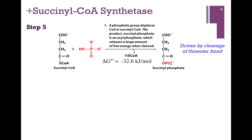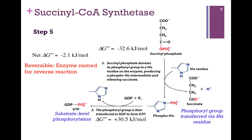At first glance it might seem like this would be an irreversible reaction, but we're only halfway through with this step. In the next part of the process, we're going to take the phosphoryl group from succinyl and eventually transfer that to GDP. However, we're going to transfer it temporarily to a histidine side chain on the enzyme, as illustrated here. The histidine residue in blue will accept the phosphoryl group, giving us a phosphohistidine enzyme intermediate, and there's our product succinate. The enzyme will then transfer the phosphoryl group to GDP to form GTP. This is another example of substrate level phosphorylation.